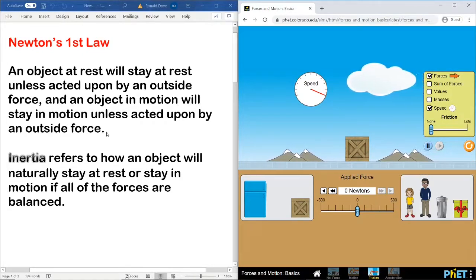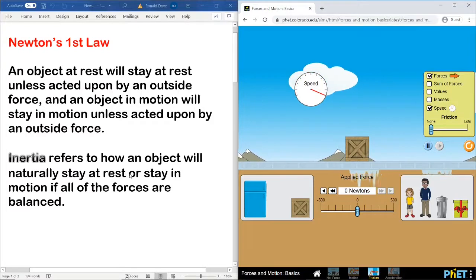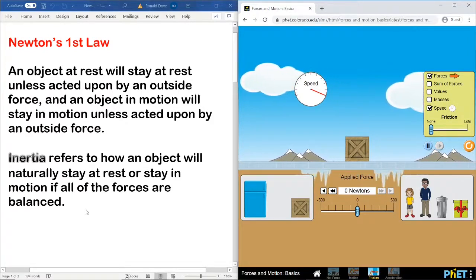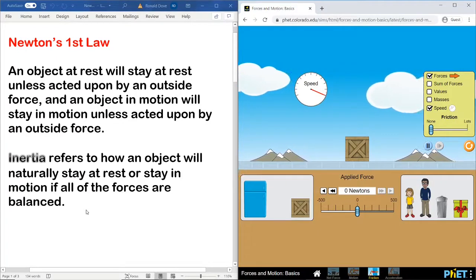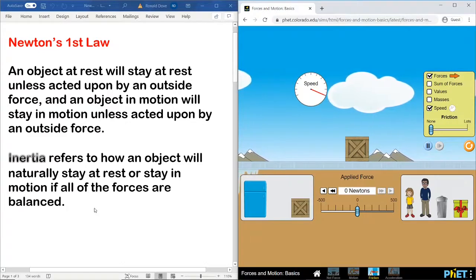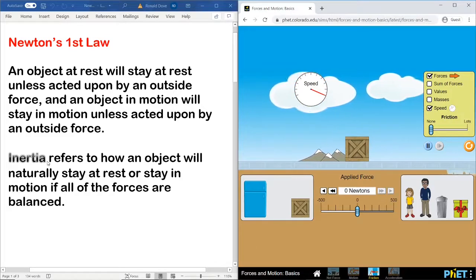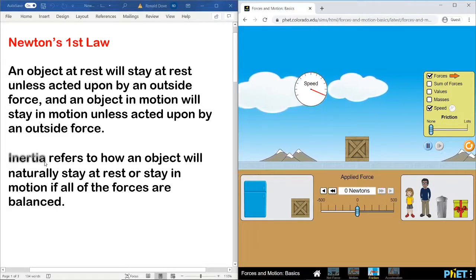The object in motion is staying in motion and there's no outside force that's going to act on it anymore. So, this idea that an object at rest will naturally stay at rest or an object in motion will naturally stay in motion if all of the forces are balanced, meaning there's no outside forces speeding it up or slowing it down or changing its direction. That idea that an object will do that is called inertia. And you can see that on the left side of the screen here, what I'm pointing to. So, that is Newton's first law.